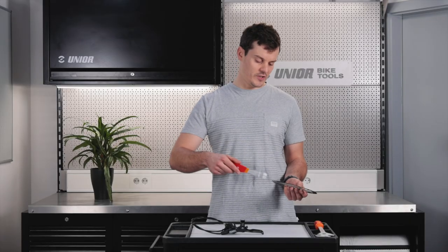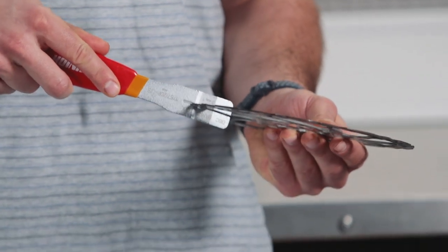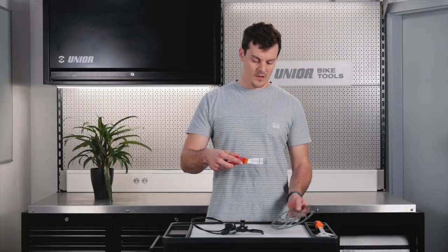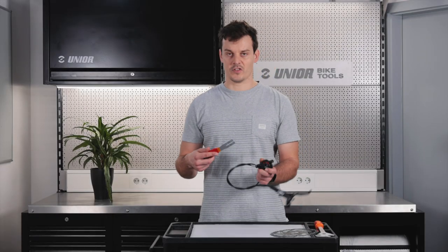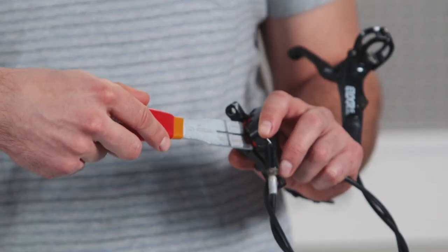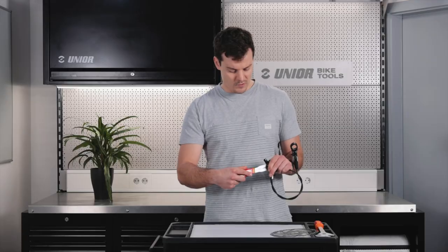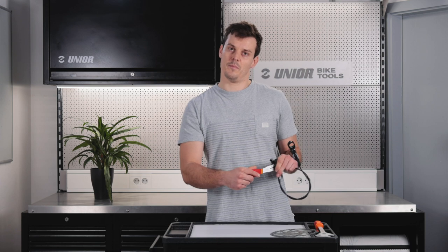To true the rotors, you just insert the tool over the rotor and bend it to the way it needs to be aligned. And to spread the disc brake pads, you insert the tool into the disc caliper and wobble it back and forth.